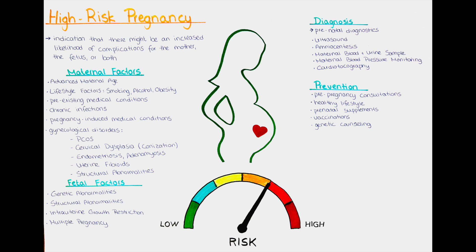Reproductive tract abnormalities, such as structural abnormalities of the uterus, cervix, or fallopian tubes, can also increase the risk of miscarriage or preterm delivery. We also have a separate video on this topic.